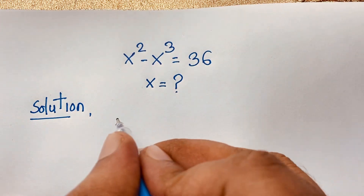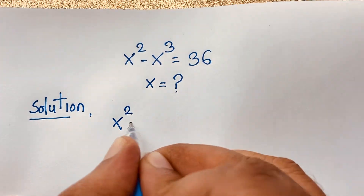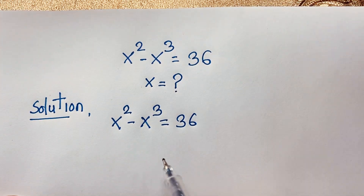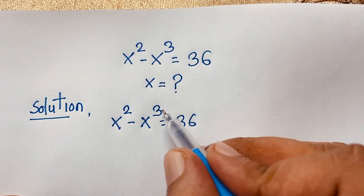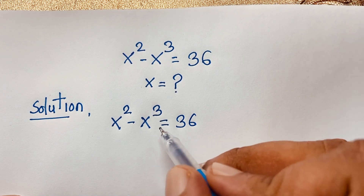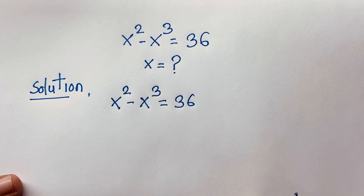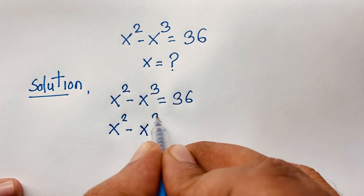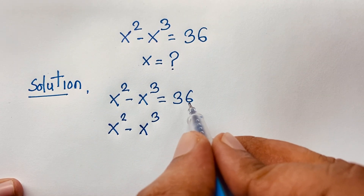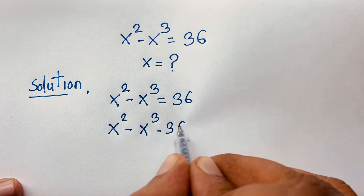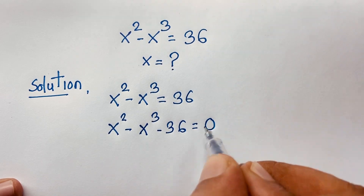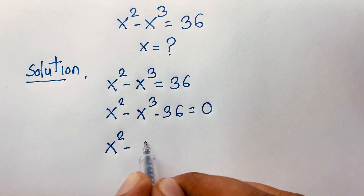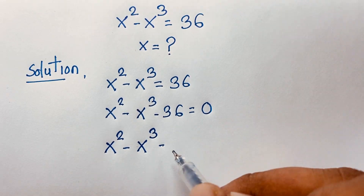Our equation is x² minus x³ is equal to 36. We can see that x equals negative 3, but here we have x to the power 3, so we find the cube root. Rearranging, this equation becomes x² minus x³ minus 36 is equal to 0.